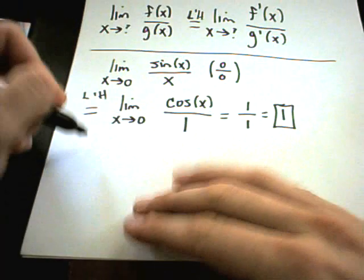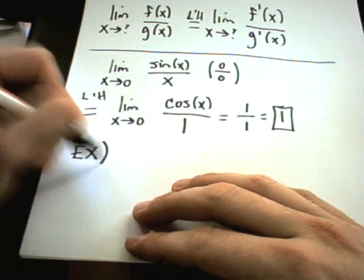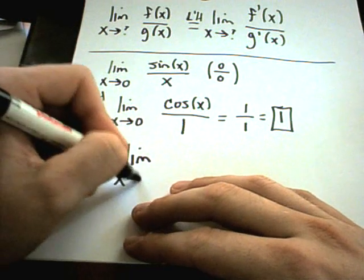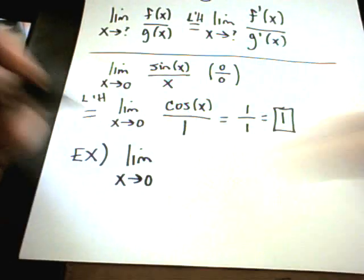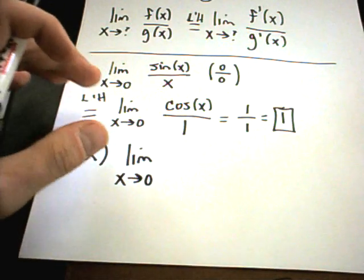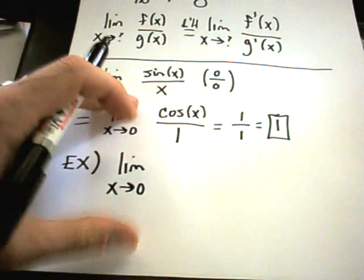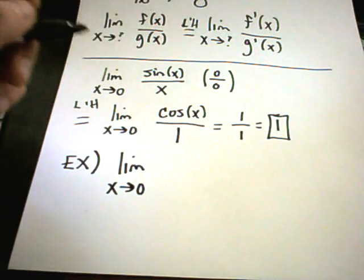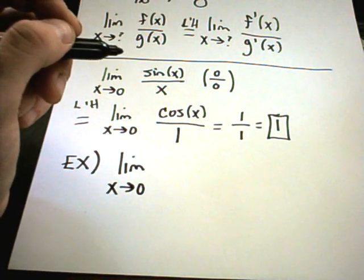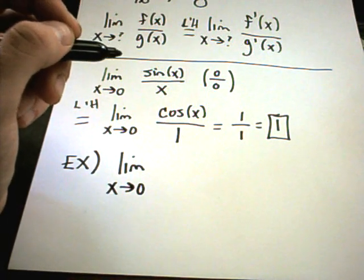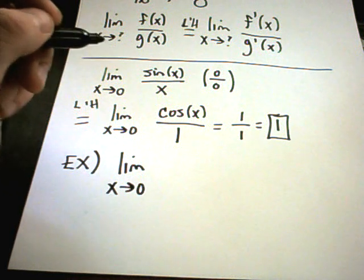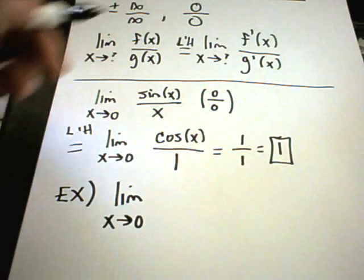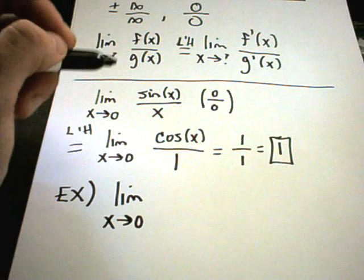L'Hôpital's Rule is one of those things that makes a lot of limit problems easier, but don't get carried away — you have to pick and choose your battles. People will try to use L'Hôpital's Rule even when it's not applicable, so really make sure you're getting either infinity over infinity or zero over zero before applying it.